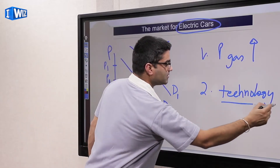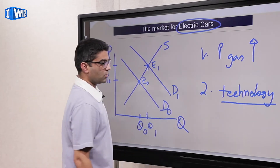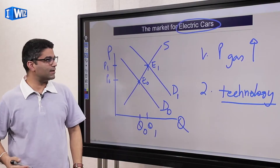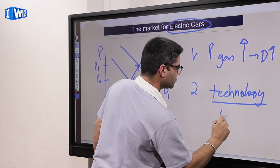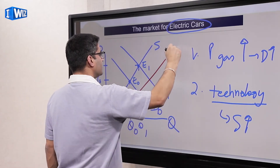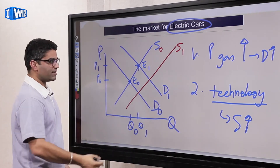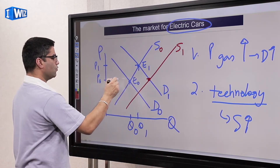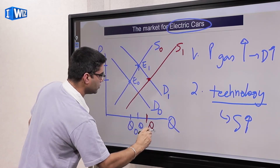The second thing that happens is an improvement in technology, which lowers the cost of producing electric cars. That increases supply — the supply curve shifts from S0 to S1. Now we have a brand new intersection point of S1 and D1. As a result, the price in this case comes back down to approximately where P0 was, and the quantity increases further to Q2.